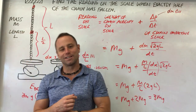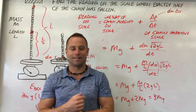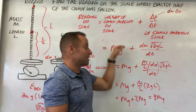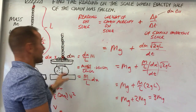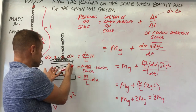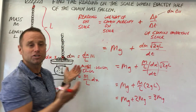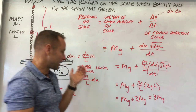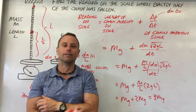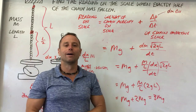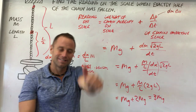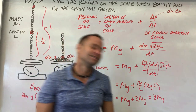So those are the two contributions. Right when the last link is hitting, the scale reads three times the weight of the chain. Then after everything has stopped and settled, it drops back down to just Mg. Hopefully that made some sense — good luck!